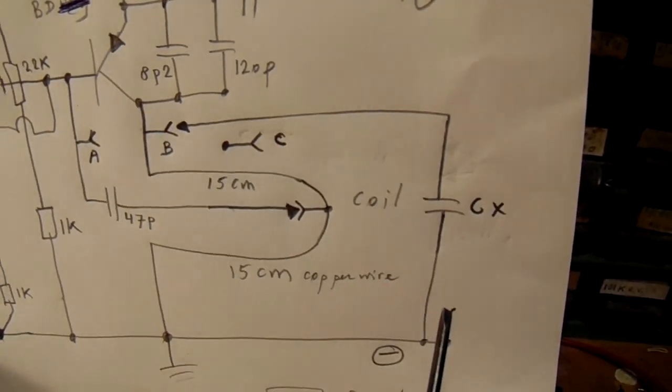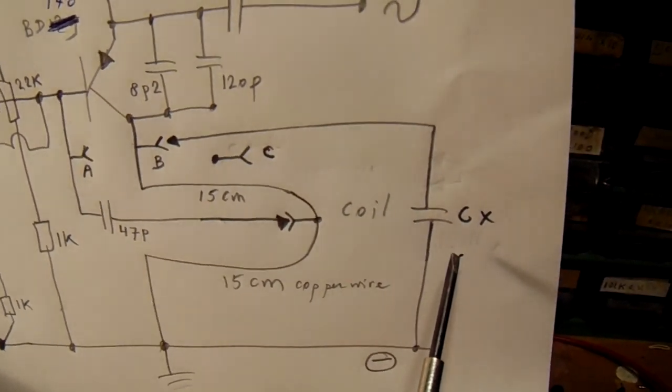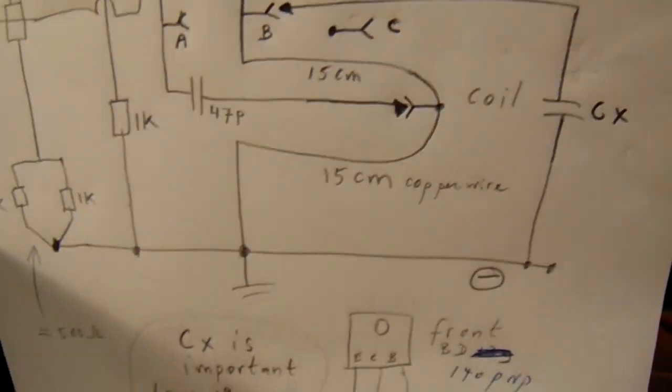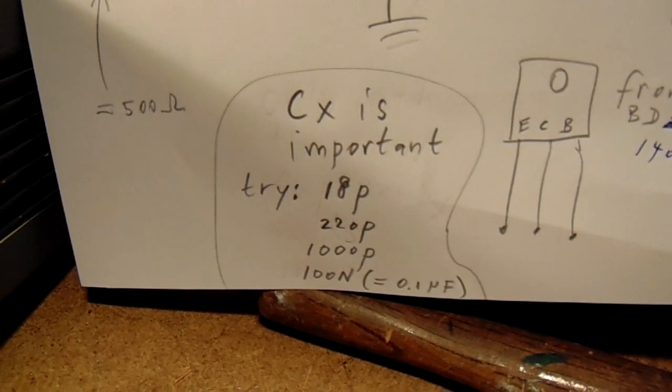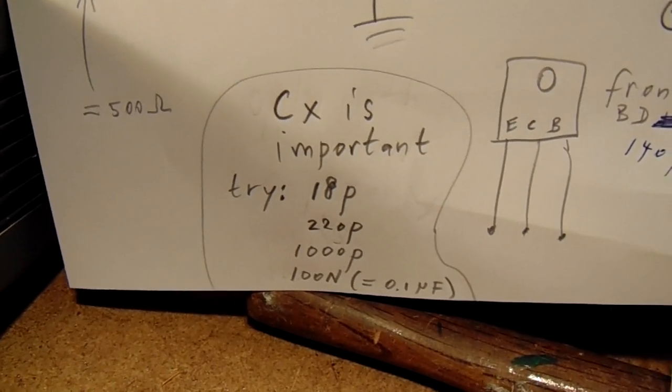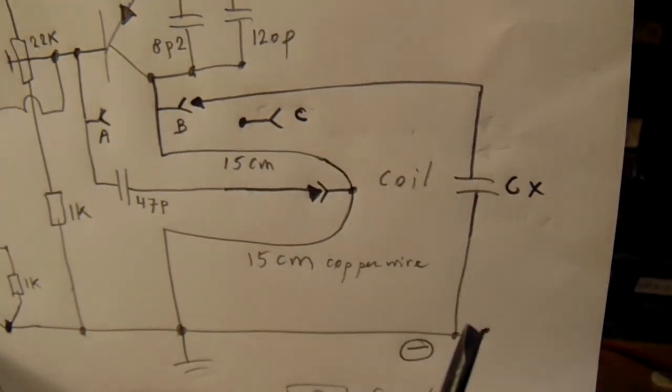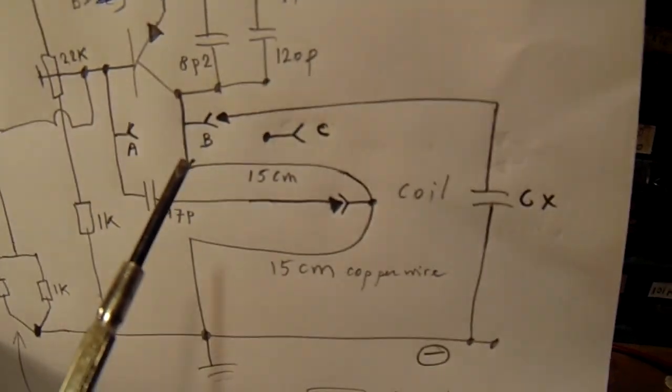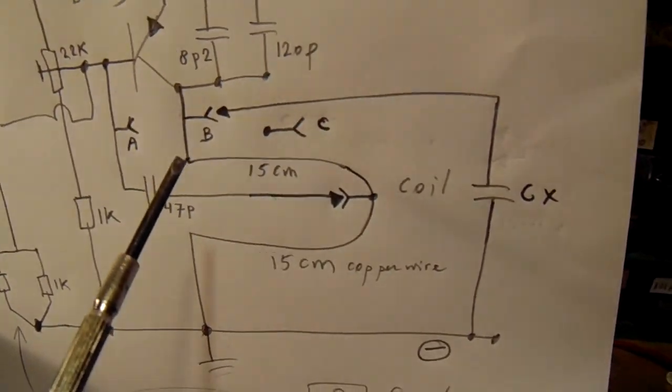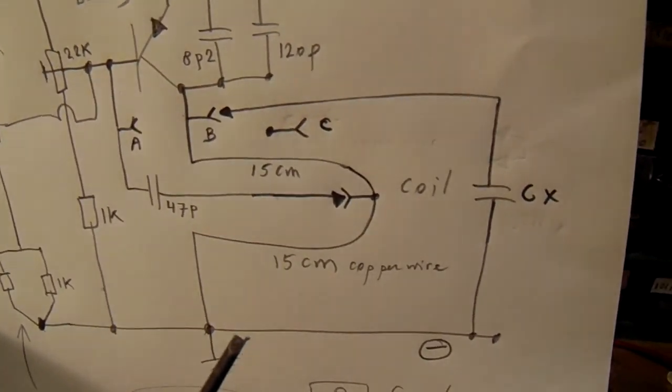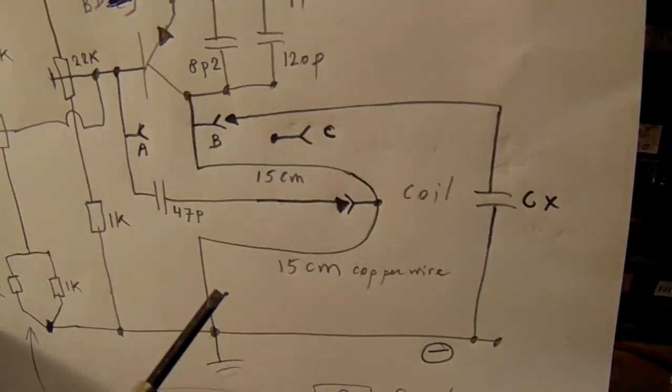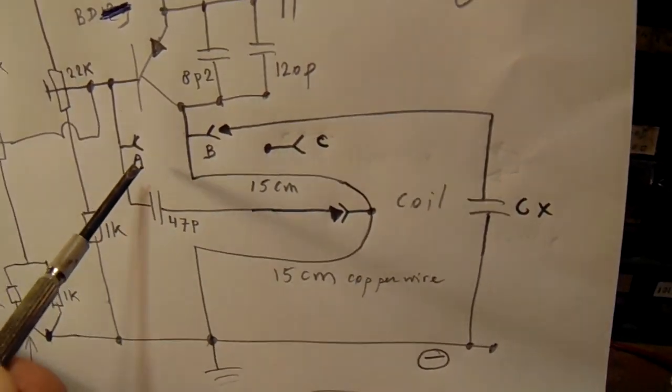It's very important to tell that we have here a capacitor CX. I've taken many values: 18 picofarad, 220 picofarad, 1 nanofarad, and 100 nanofarad. When you do that and connect them here to the top of the coil, you can see very peculiar waveforms. Sorry, that's not true—when you connect it to A, to the base.